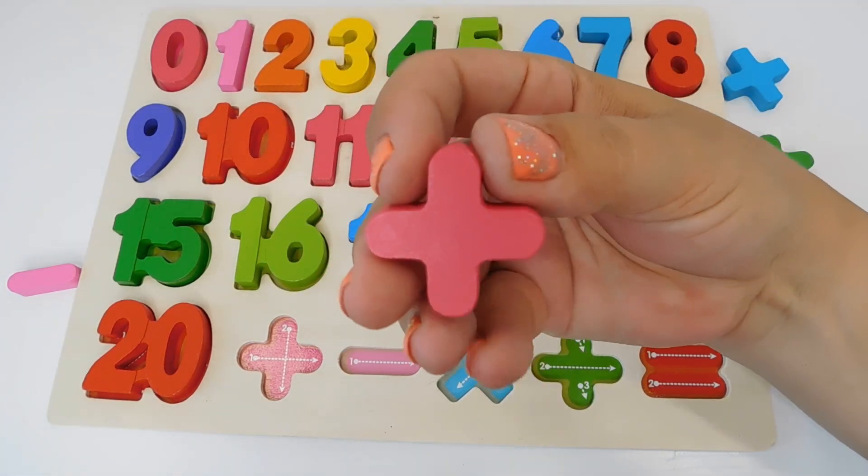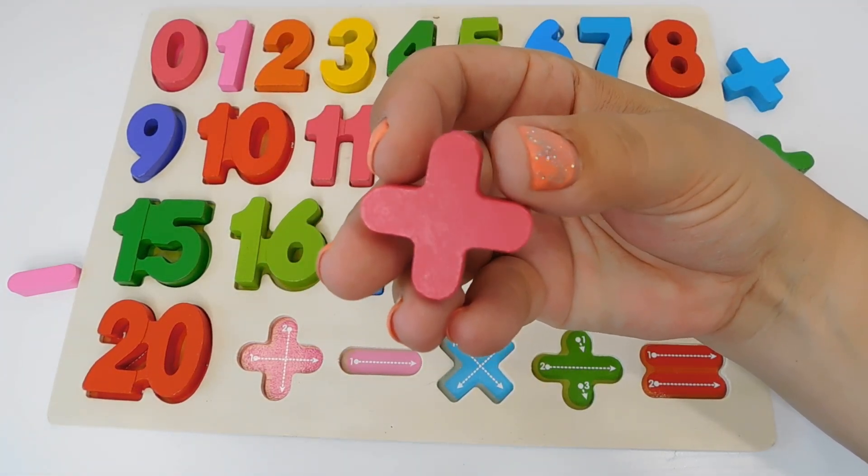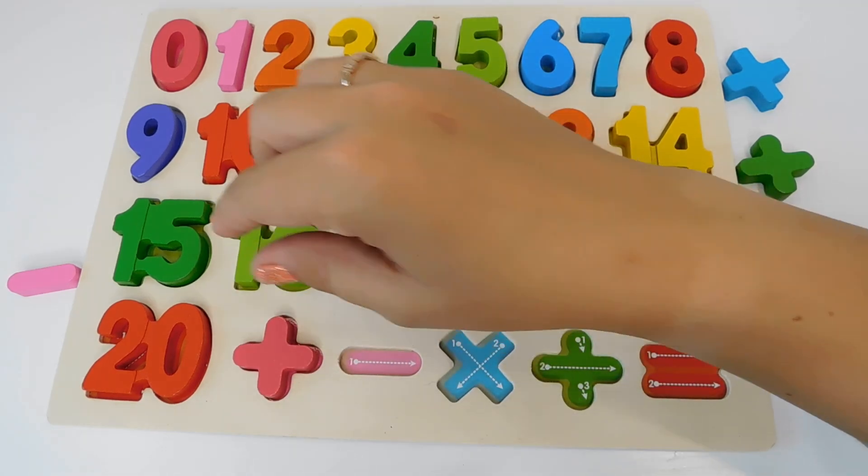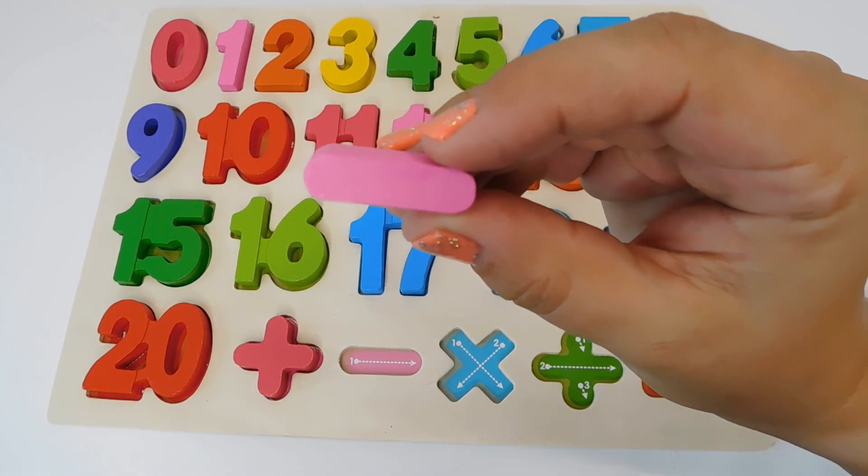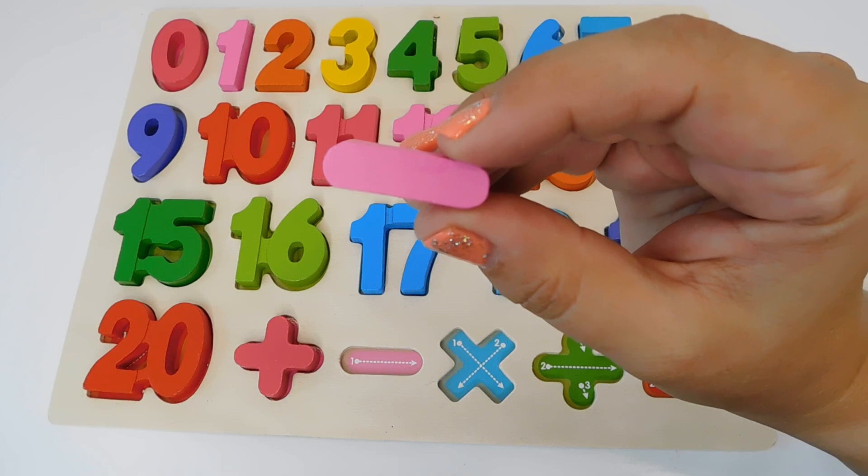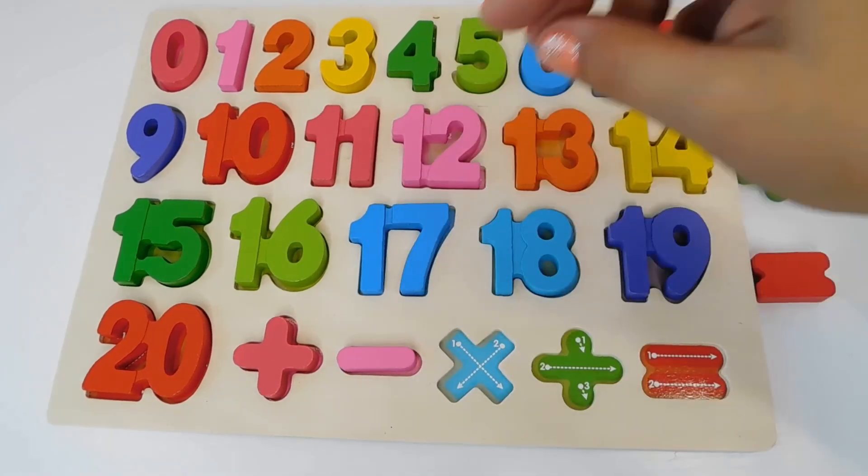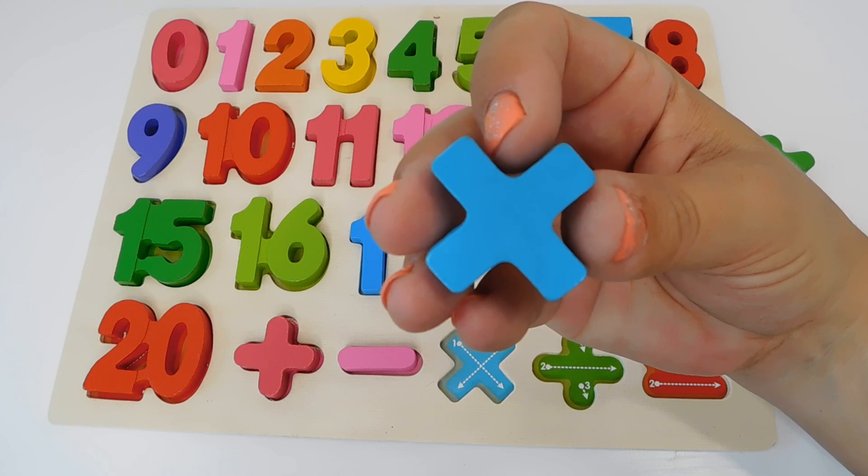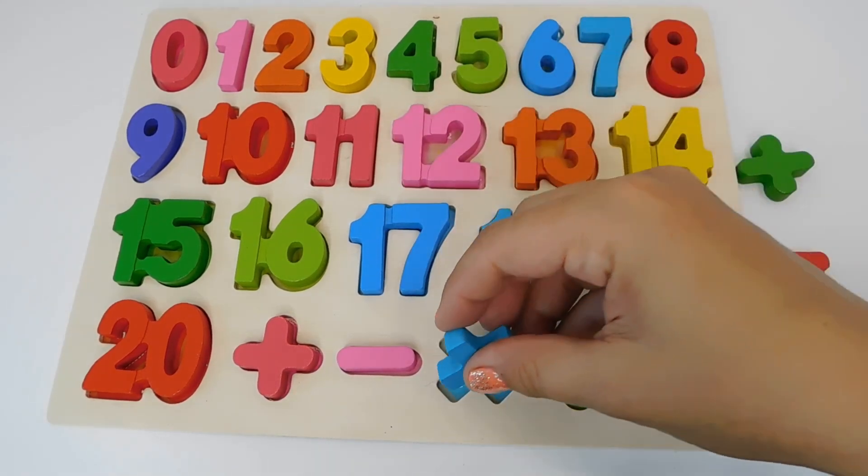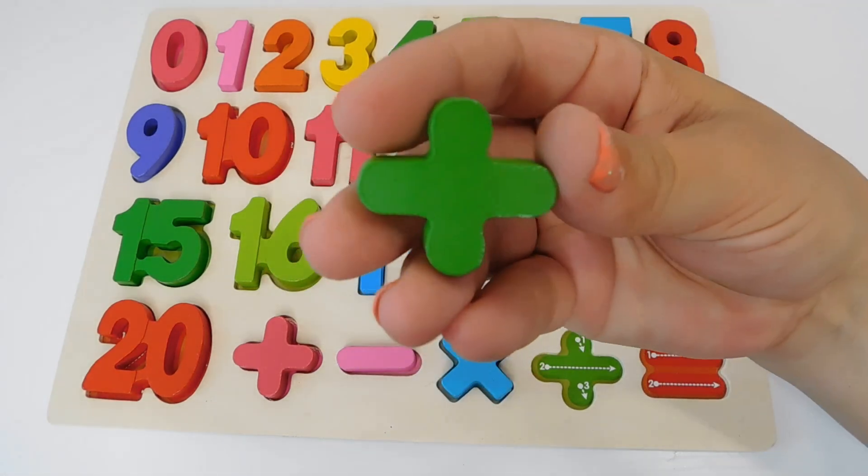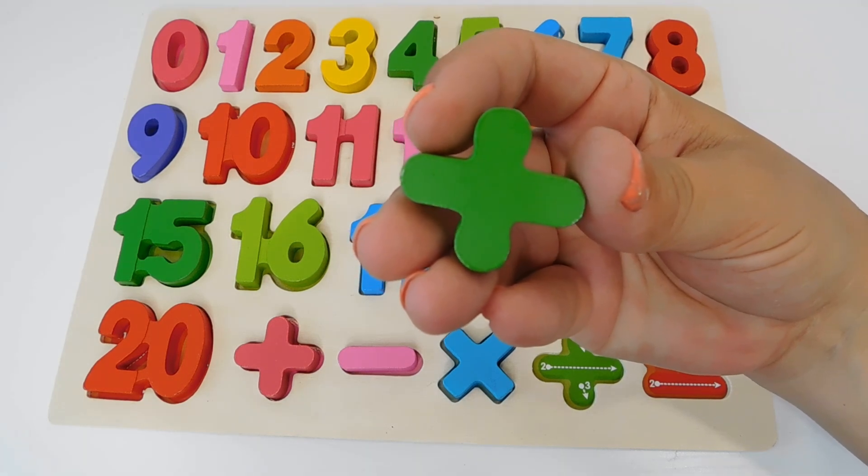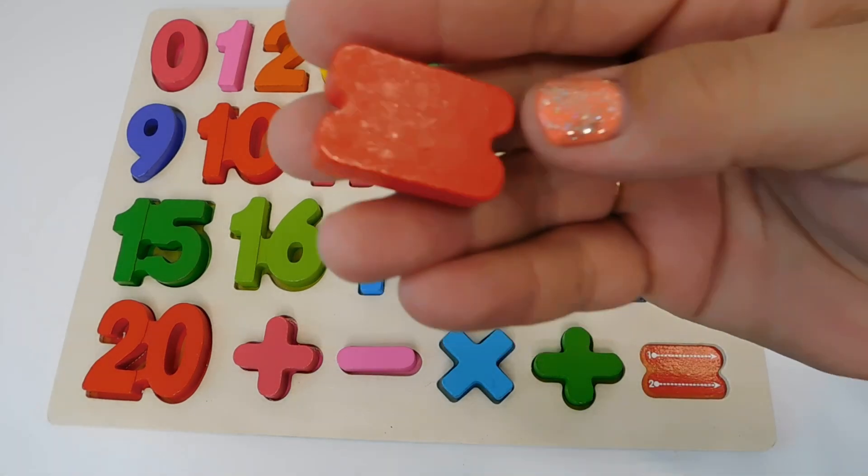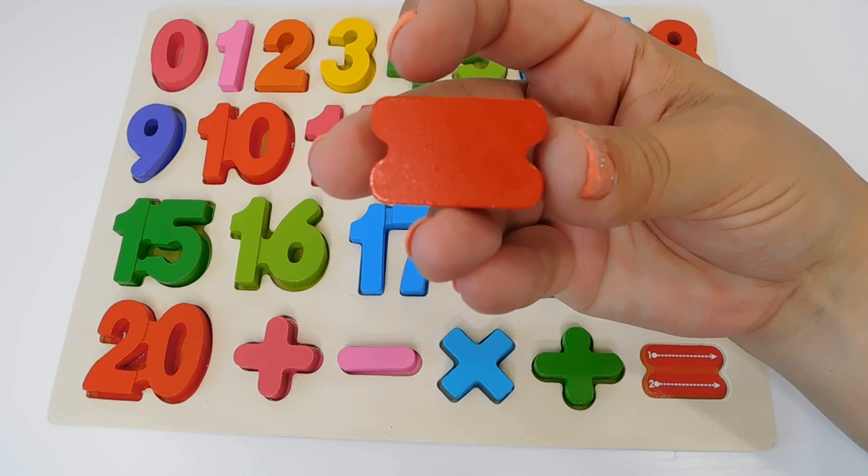This is a pink plus sign. Plus. A plus means you add numbers together. This is a minus sign. This is light pink. And a minus sign means you take away. This is a multiplication. It is light blue. It means times. This is a divided by sign. And it's green. Divided by green. And this is an equal sign. Equals. And it's orange.